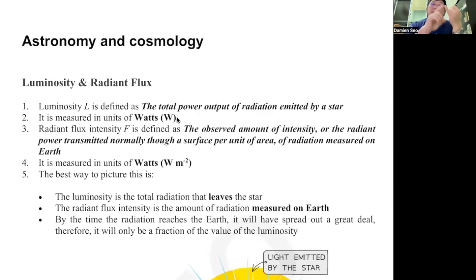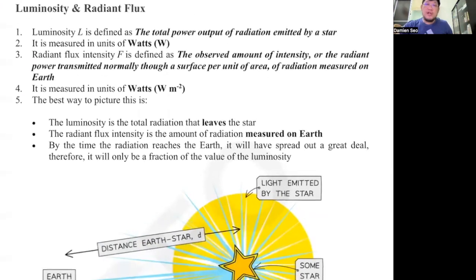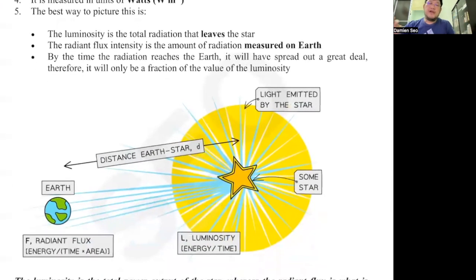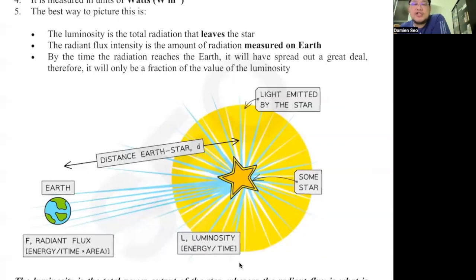It's not just power — it's power per unit area. So the unit will be watts per meter squared. If you want a diagram to help you imagine: this is the star, this is the total energy per unit time emitted — that's luminosity. This is energy per unit time per unit area detected — that is radiant flux intensity.